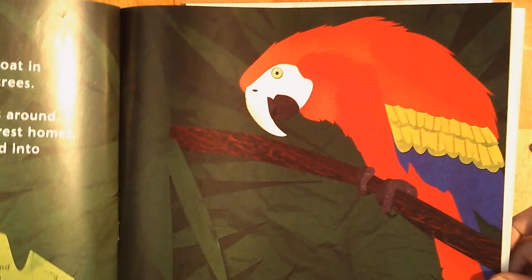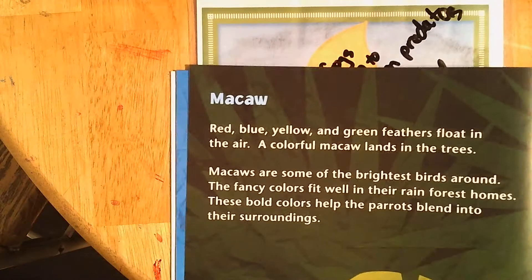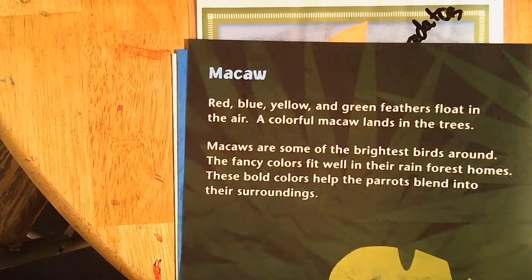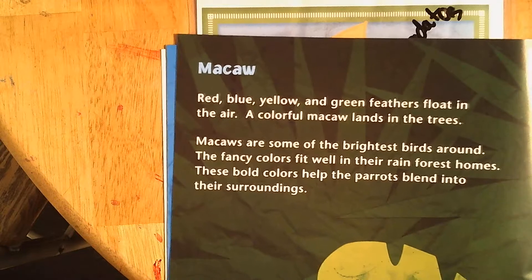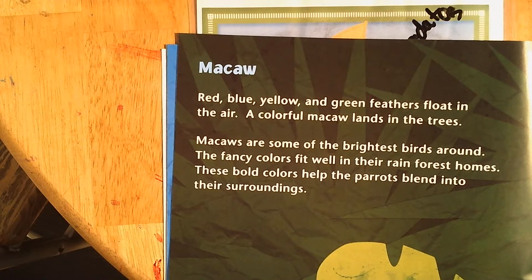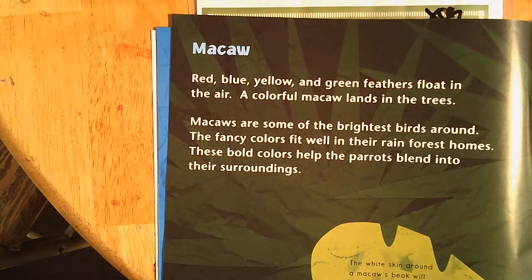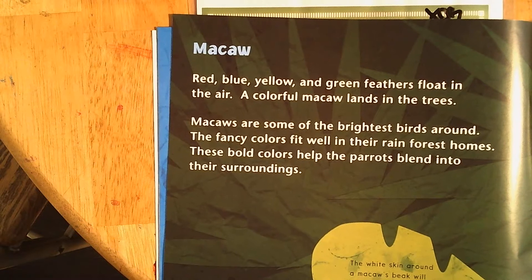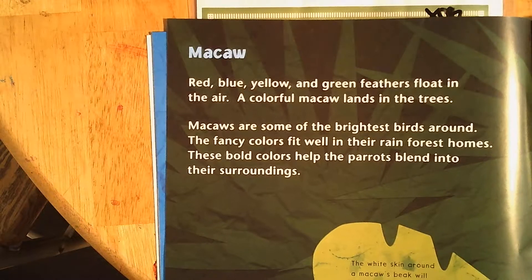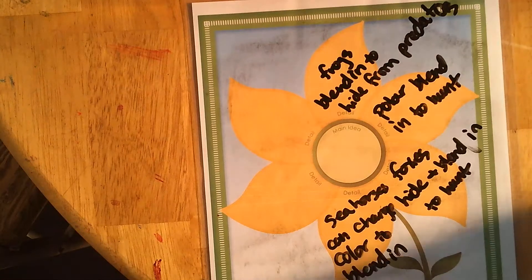Macaw! Red, blue, yellow, and green feathers float in the air as a colorful macaw lands in the trees. Macaws are some of the brightest birds around. The fancy colors fit well in their rainforest homes, and these bold colors help the parrots blend into their surroundings. The white skin around a macaw's beak will turn red if the bird is excited or angry. So that one also blends in to hide from predators.